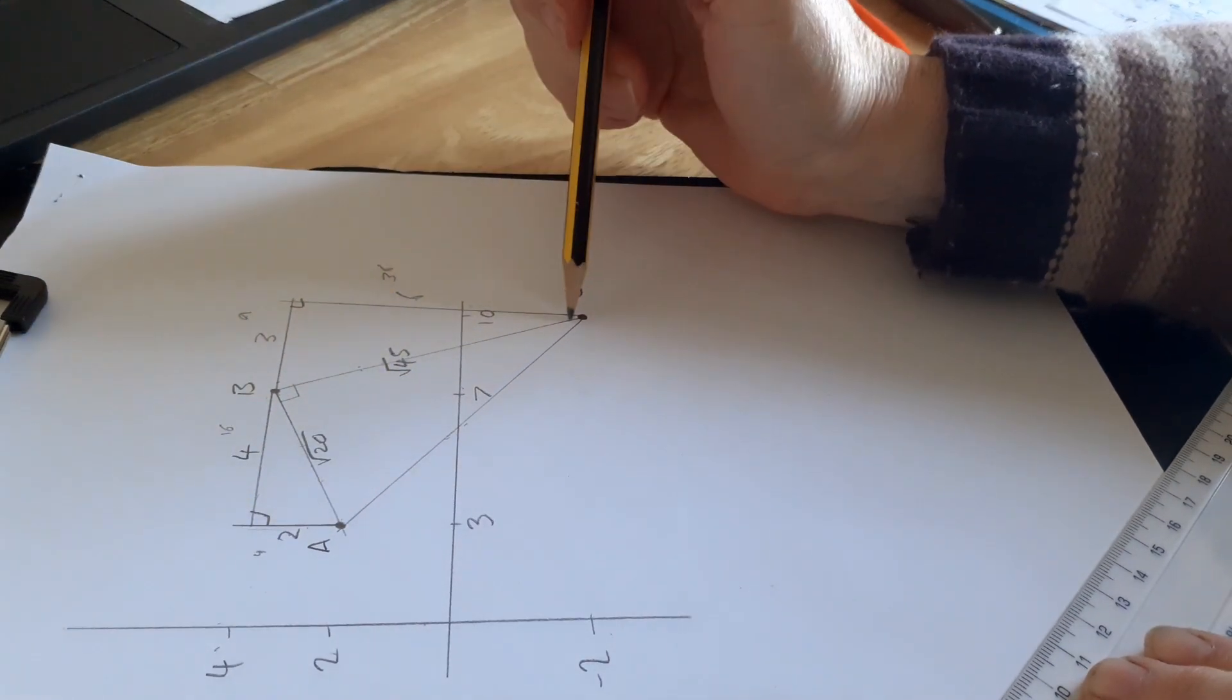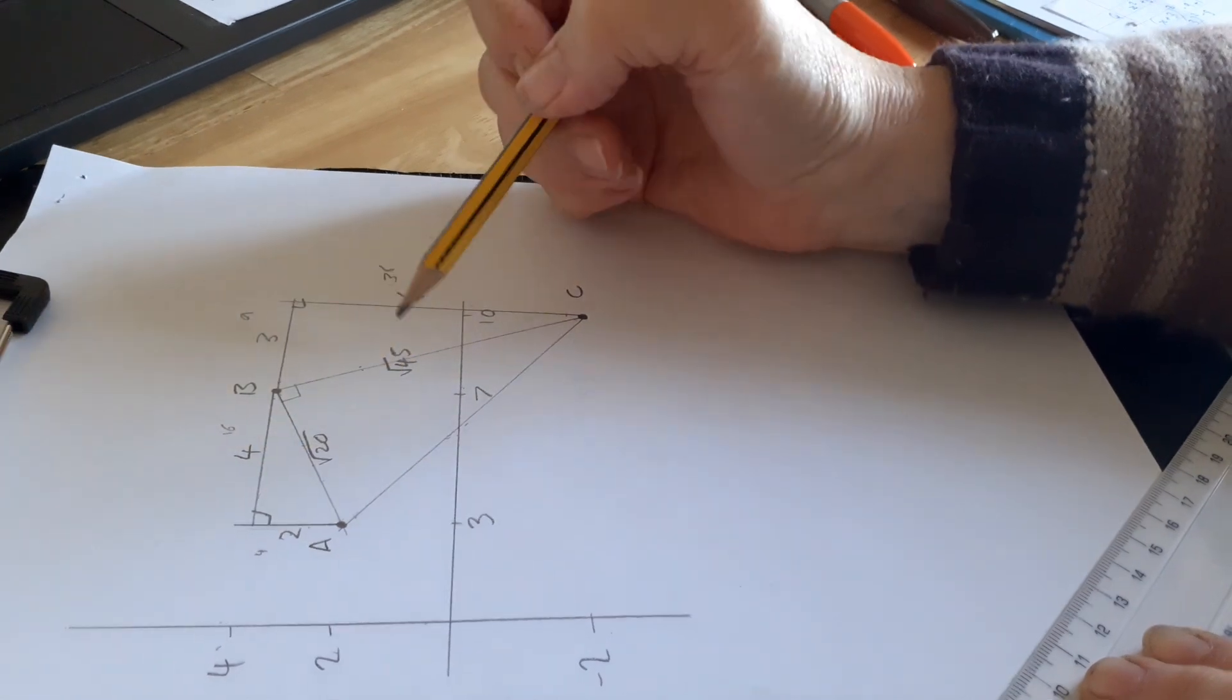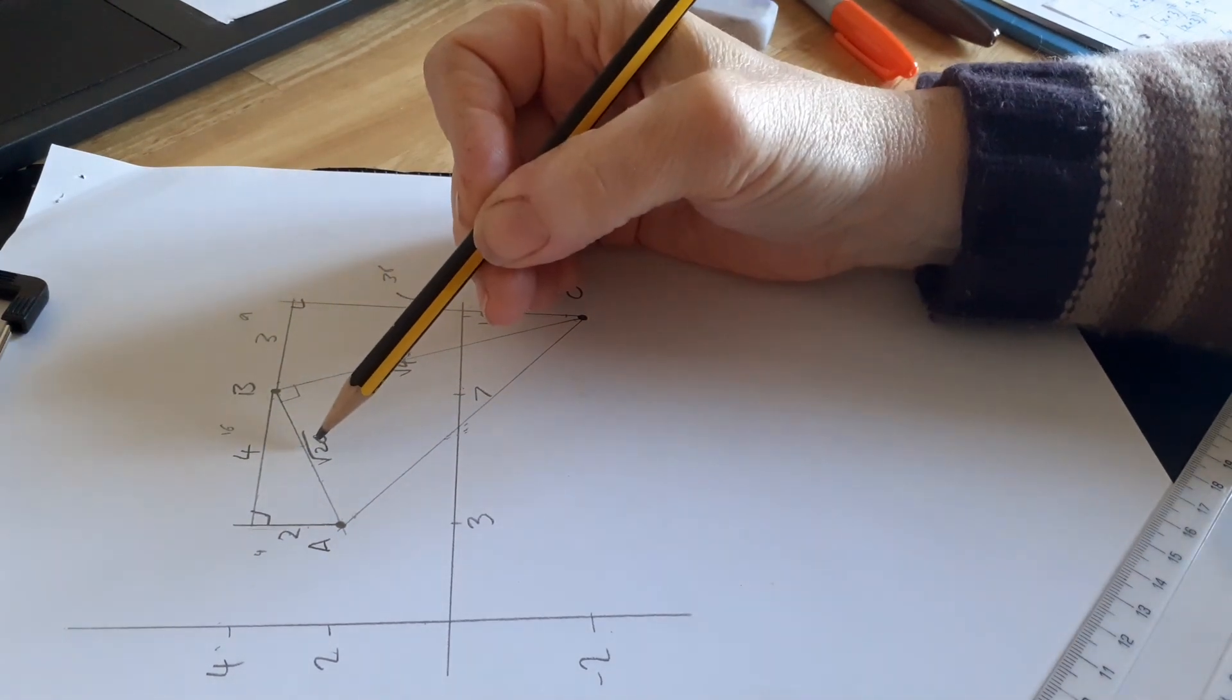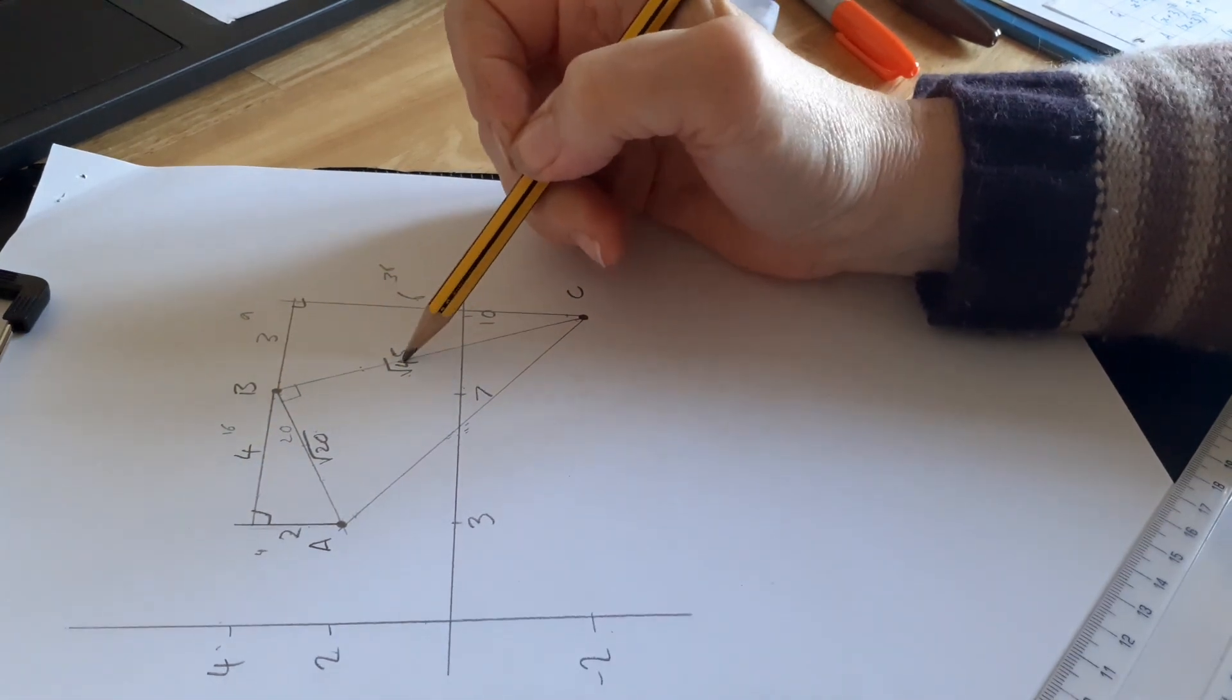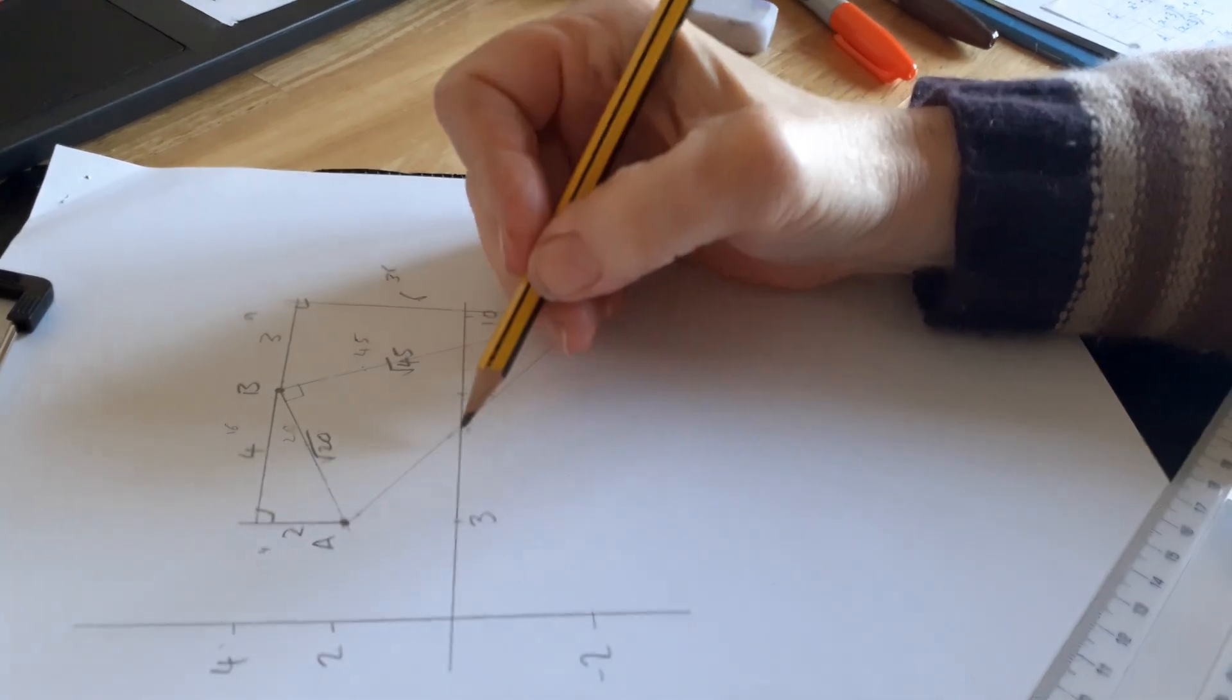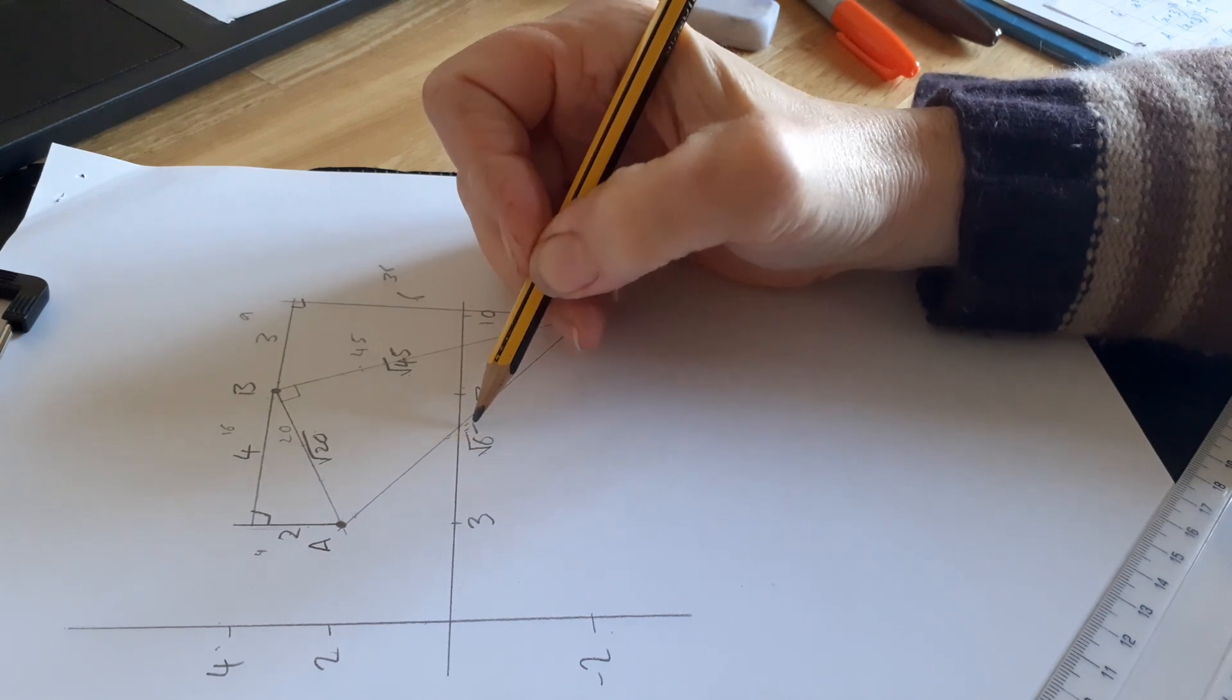Now I'll go back to my original right angle triangle. If I square this and square this, add them together, that gives us the square of this. So the square of root 20 is 20. The square of root 45 is 45. Add those together I get 65, and that's the square of this. So this should be the root of 65.